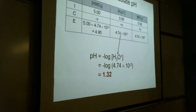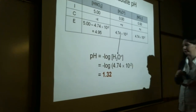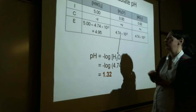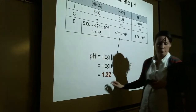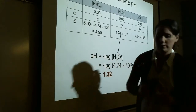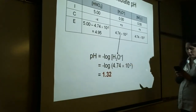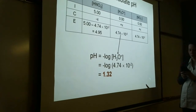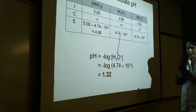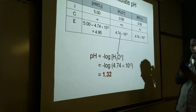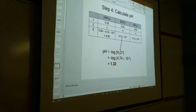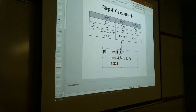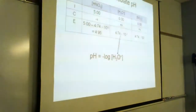Wait — three sig figs means I should have three decimal places in the pH. I need to carry out one more decimal place. With three total sig figs, I need one more decimal place, so the answer is actually 1.324.